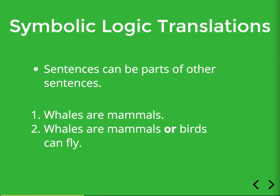Sentence one — 'whales are mammals' — doesn't have any other sentences as parts, so we'll say it is an atomic sentence, because it can't be broken down further. Sentence two is a complex sentence, which is a sentence that does have another sentence as a part. An atomic sentence represents one simple fact, whereas a complex sentence states two facts or involves two different propositions. Strictly defined, a complex sentence is simply a sentence that has another sentence as a part.